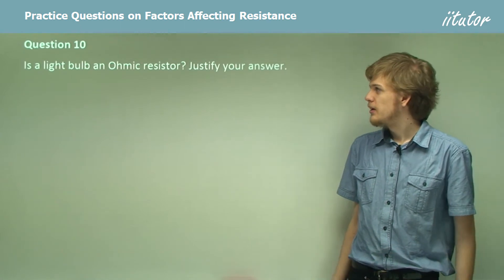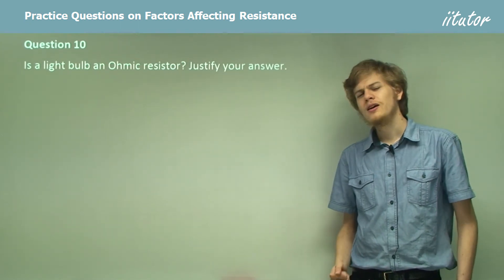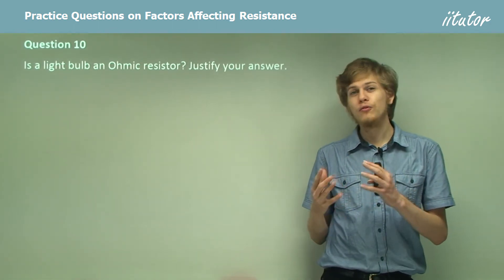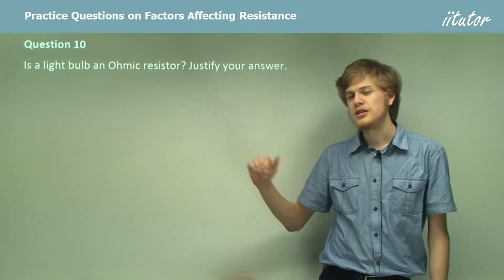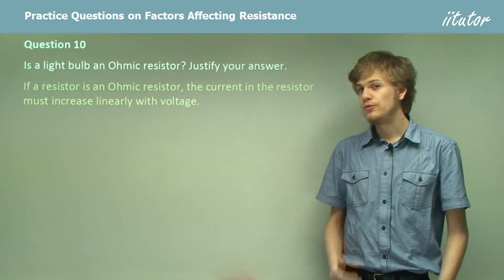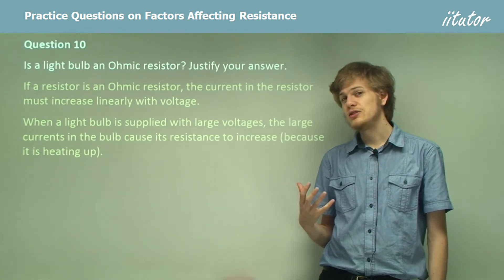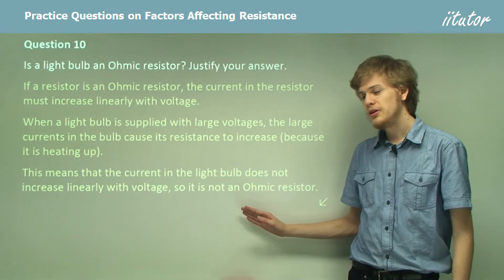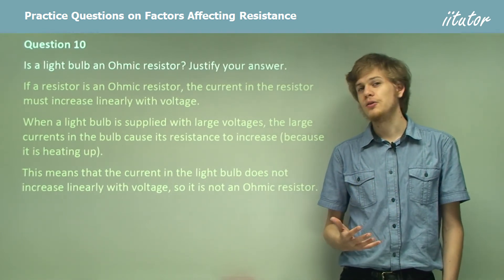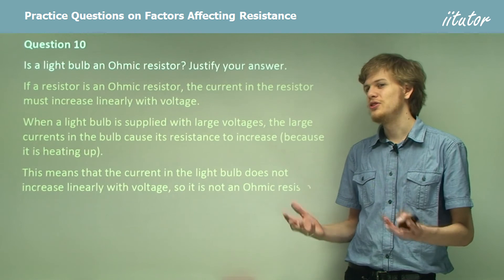Question 10. Is a light bulb an ohmic resistor? Justify your answer. An ohmic resistor requires current to increase linearly with voltage at all times, but this is not the case for a light bulb. When a light bulb is supplied with large voltages, the currents cause its resistance to increase, so the current does not increase linearly — it decreases away from the linear relationship. Therefore, a light bulb is not an ohmic resistor, just like most resistors in the real world.